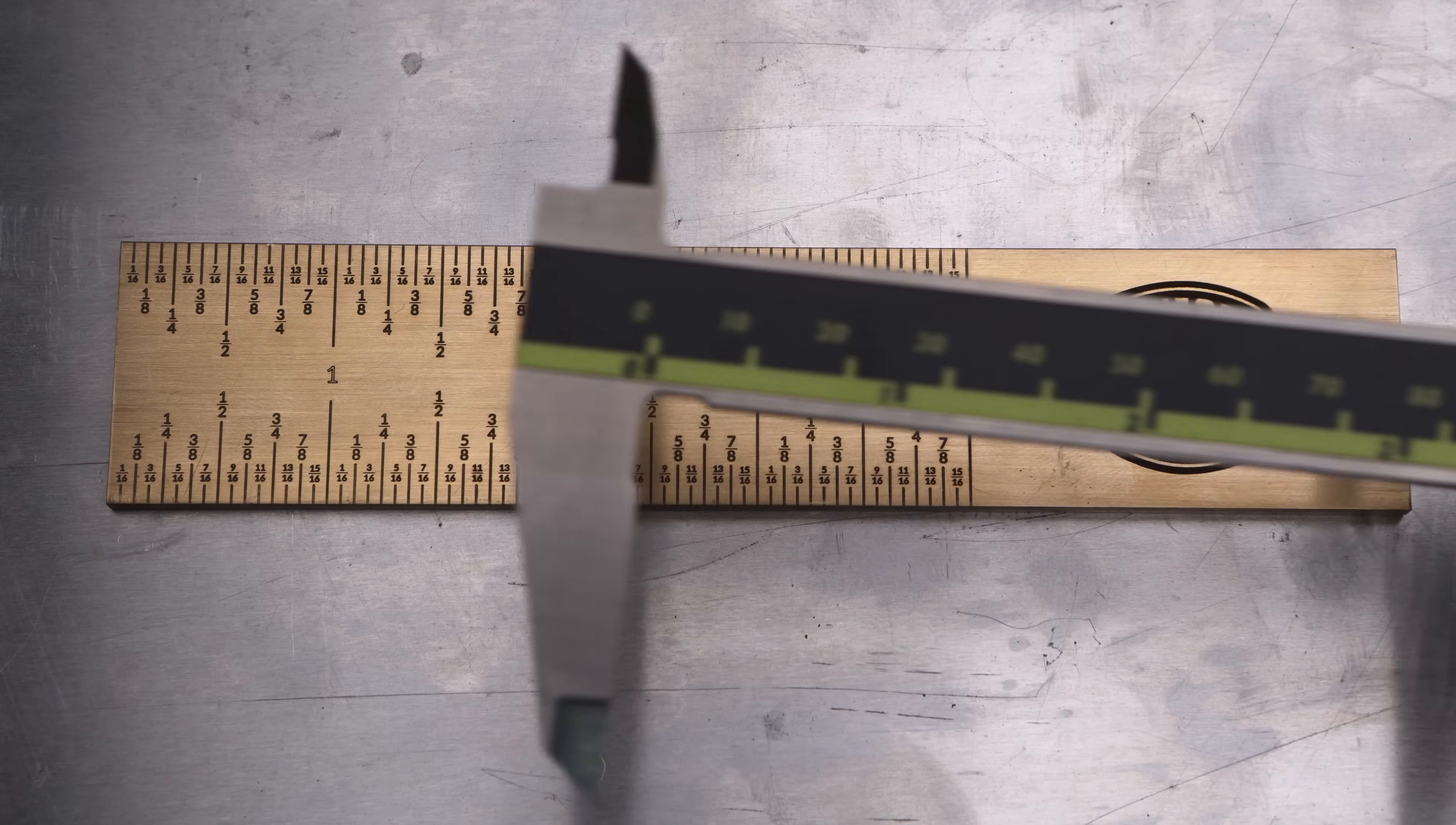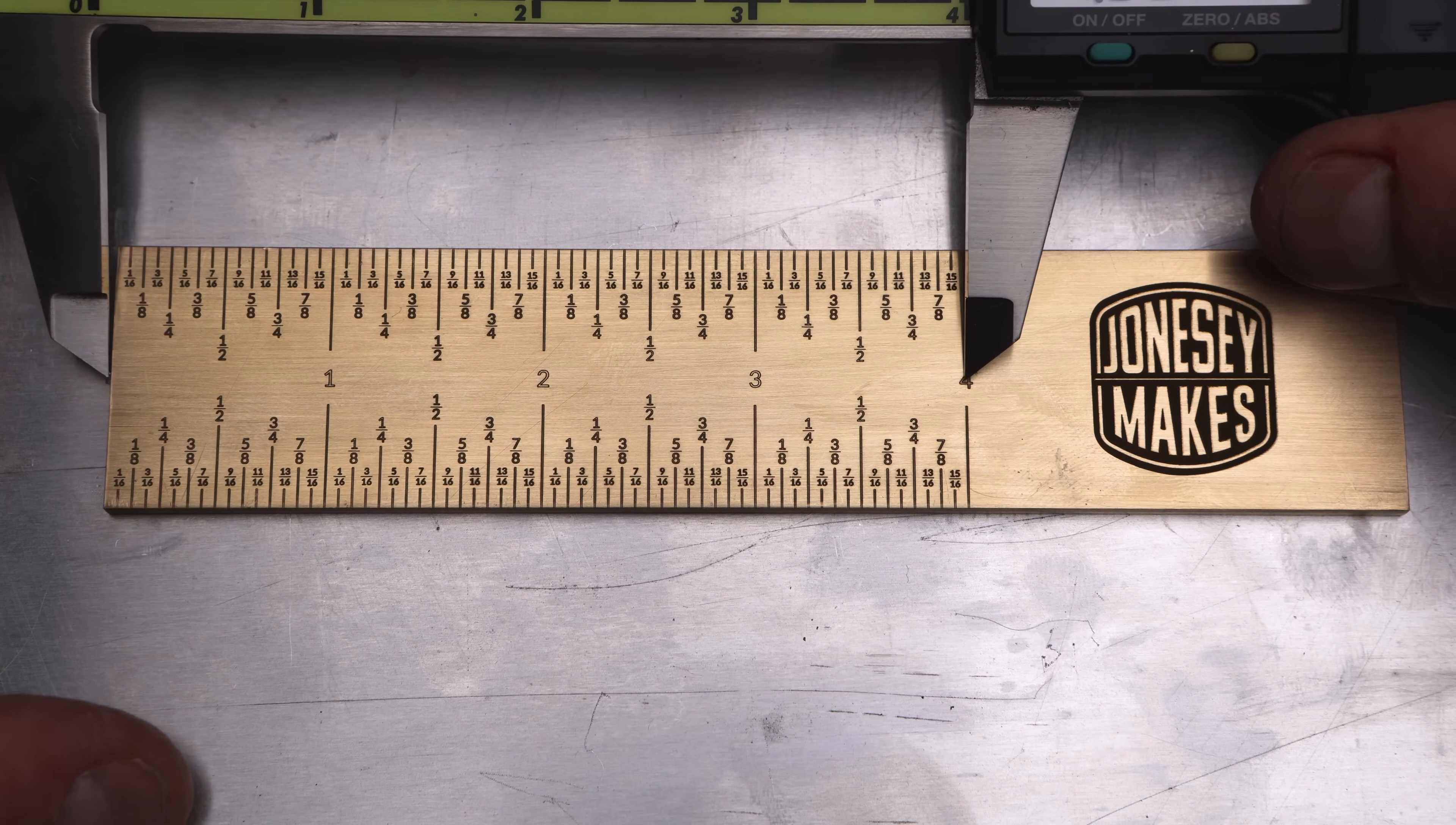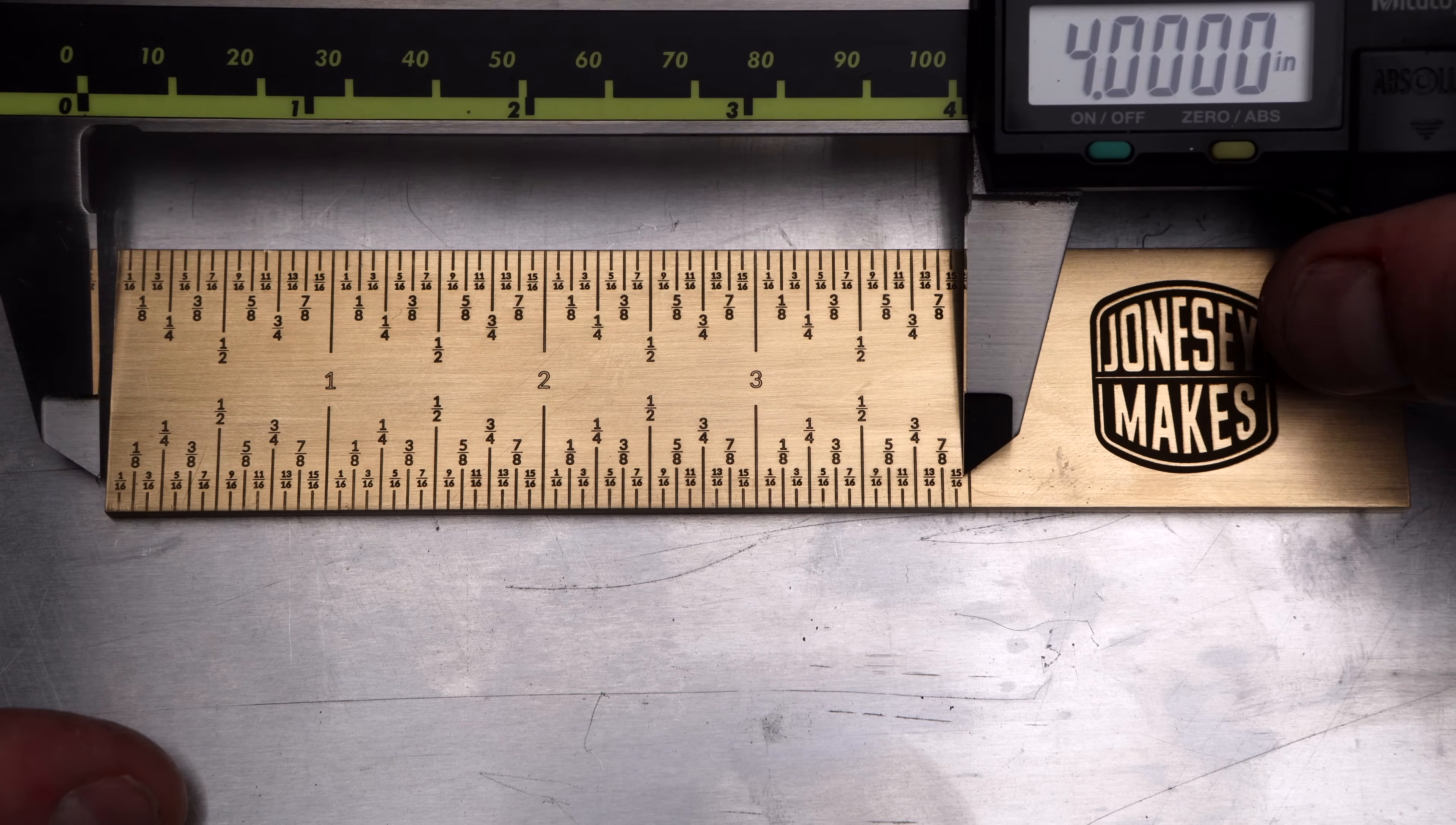Now, let's check the imperial side. I don't actually have an imperial scale with which to check this. But I've opened up my calipers to exactly four inches and we'll see how that lines up. And once again, it's spot on, meaning that we've got a functional tool ready for use.